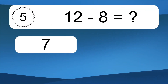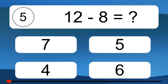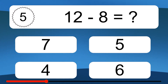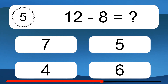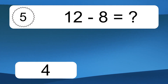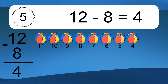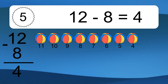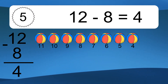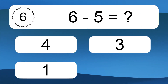12 minus 8 equals what? 12 minus 8 equals 4. Let's count it: 11, 10, 9, 8, 7, 6, 5, 4.